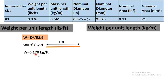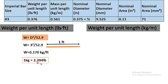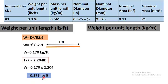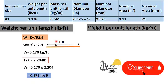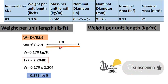The calculation gives 0.170 kg per foot. Since kg and feet come from different unit systems, we convert to lbs per foot: multiplying 0.170 by 2.204 (since 1 kg = 2.204 lbs) gives 0.375 lbs per foot. This is the weight of a number 3 bar that is 1 foot long.